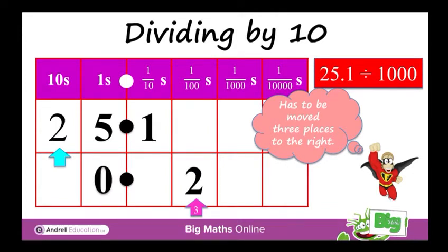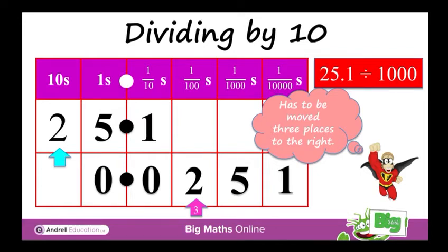Now we can put a 0 in front of the decimal place and a 0 in the 10ths column, because nothing is going to go into those two columns — there's nothing to the left of the 2. Then we can just copy the other two digits after the 2. So the 5 goes in the 1000ths column and the 1 goes in the 10 thousandths column. And if you want to check that, you can count along and see that the 5 has gone three spaces and the 1 has gone three spaces.